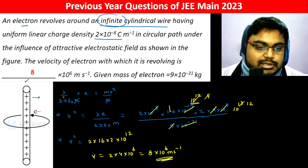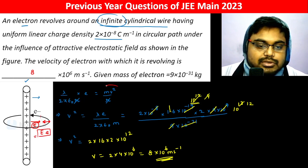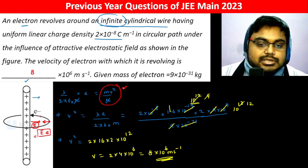So in a nutshell, the electric field is lambda/(2πε₀R). The force is electric field times charge. This equals mv²/R, which is the centripetal force.